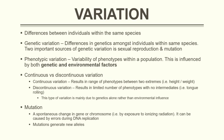Variation is defined as differences between individuals within the same species. You can have genetic variation, which is differences in genetics amongst those individuals. Two important sources of genetic variation are sexual reproduction and mutation. You can also have phenotypic variation, which is the variability of phenotypes, and this is influenced by both genetic and environmental factors.